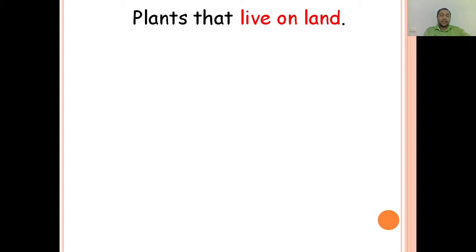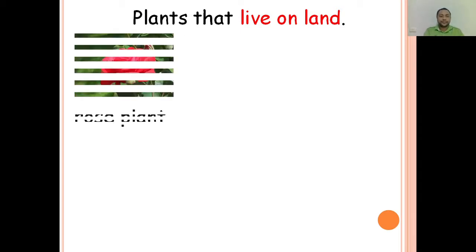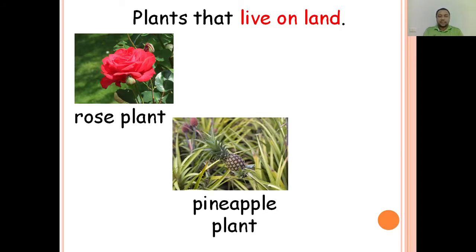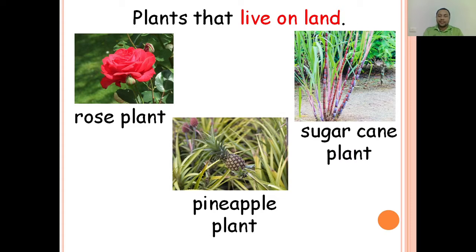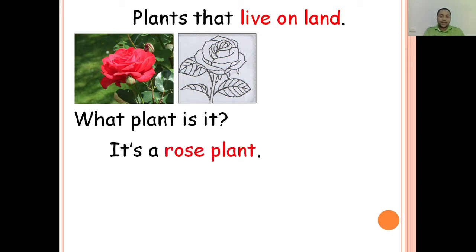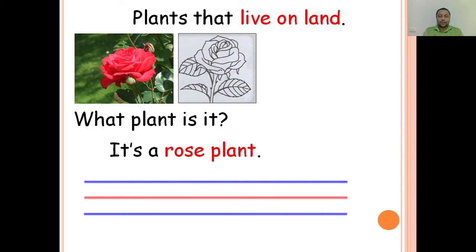These are plants that live on land. Examples: rose plant, pineapple plant, and sugar cane plant. What plant is it? It's a rose plant. You write rose plant in your worksheet.